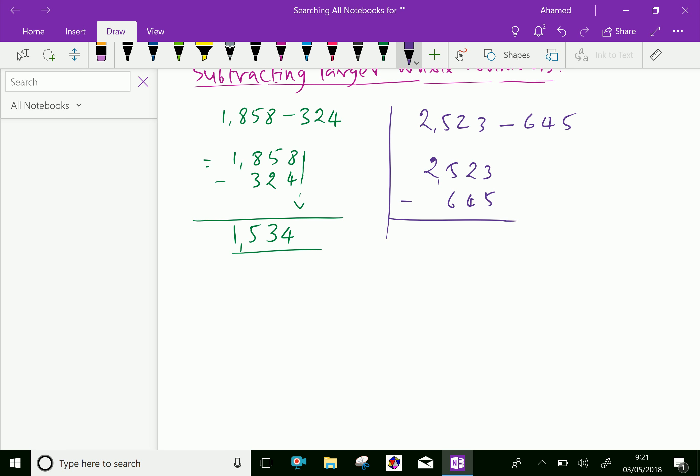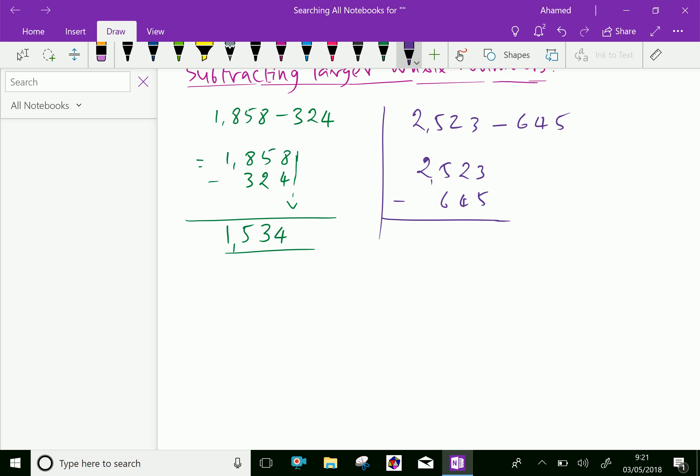So we have to borrow from the next neighbor, which is the 2. When you borrow 1, the 2 becomes 1, and this becomes 13. Now 13 minus 5 is 8.